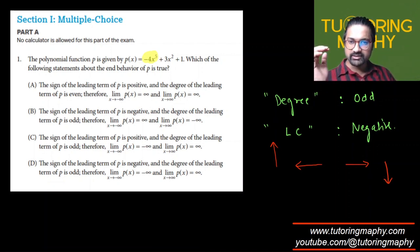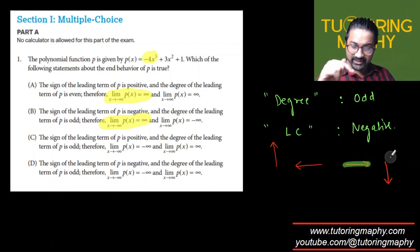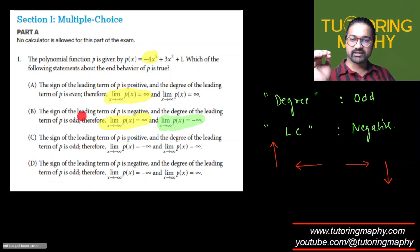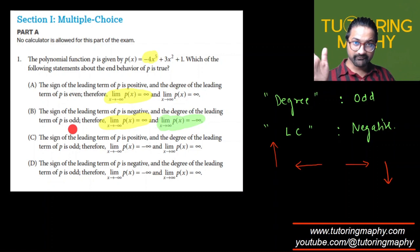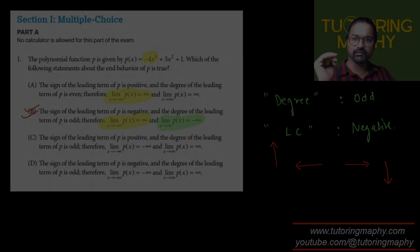We can say that the limit as x approaches negative infinity is positive infinity, and the limit as x approaches positive infinity is negative infinity. Option B states that the sign of the leading term is negative and the degree of the leading term of p is odd — which is exactly correct. So the correct choice is option B.